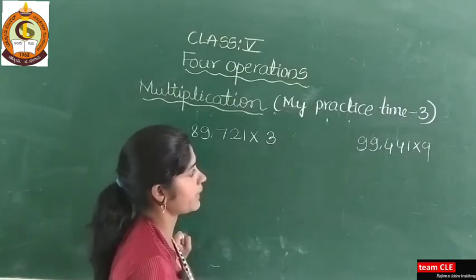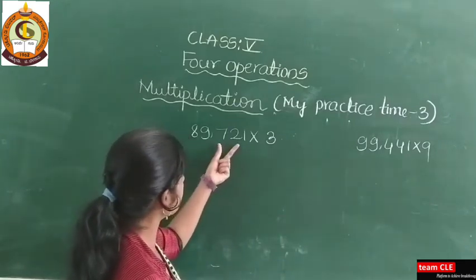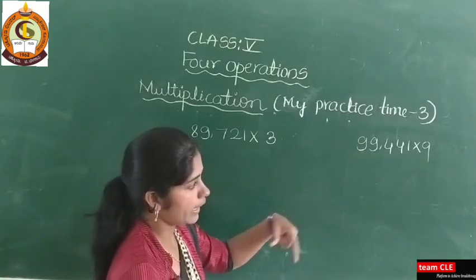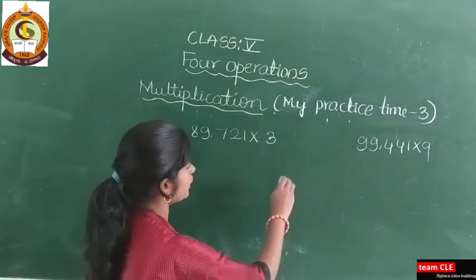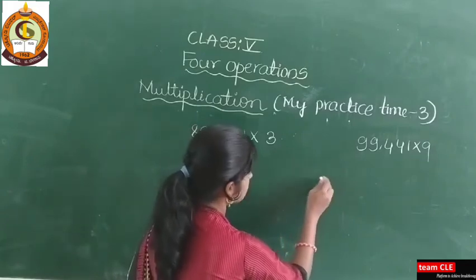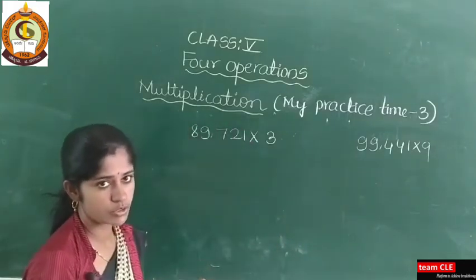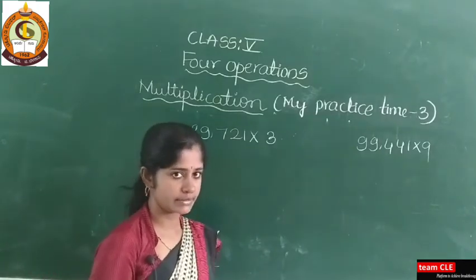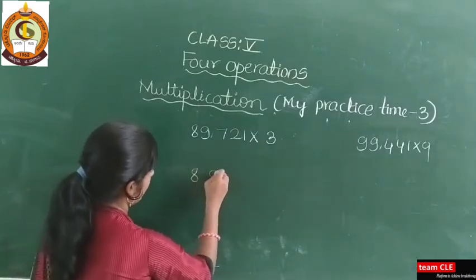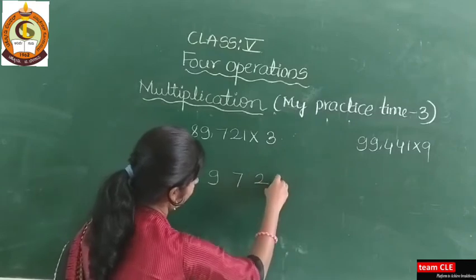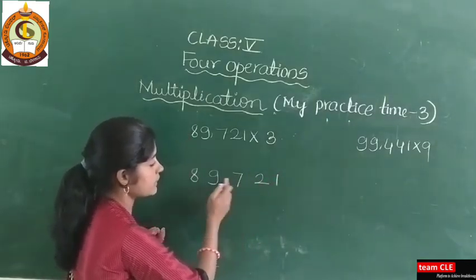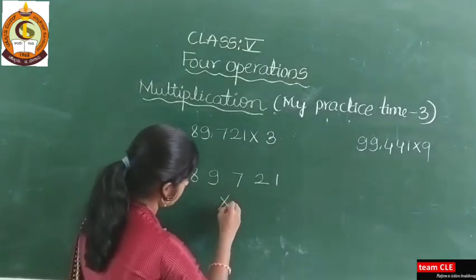I took some examples from your My Practice Time 3, and that is 189,721 into 3. Here only 1 digit is there. In this class I am also going to teach you 2 digit multiplication. Not only 1 digit — you have 2 digit, 3 digit, and 4 digit multiplication also. Please keep practicing this kind of examples. Let us start with easy examples and I will take here 89,721. While writing the example numbers, leave a space in between the numbers. Next, write 3.